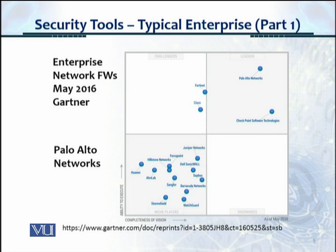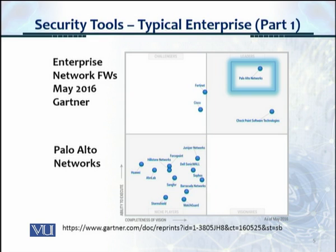For Enterprise Network Firewalls from May 2016 from Gartner, we have two main vendors: Palo Alto, and then Checkpoint at a distance. The difference between an Enterprise Network Firewall and a UTM is that the Enterprise Network is a carrier-grade device, which perhaps a telco would use. It's a more serious box and gives serious firewall functionality, as compared to a UTM which is used for Small and Medium Business. Palo Alto is a clear leader in Enterprise Network Firewalls.